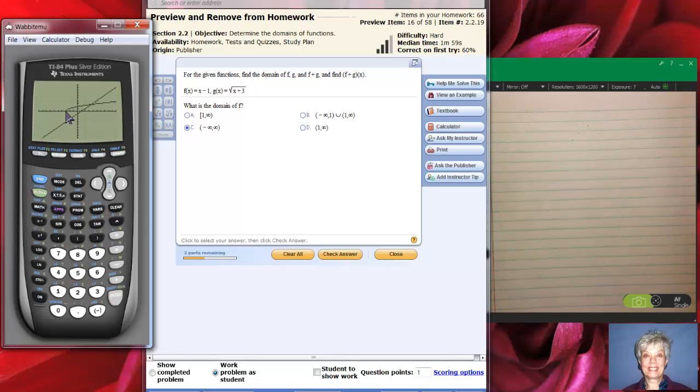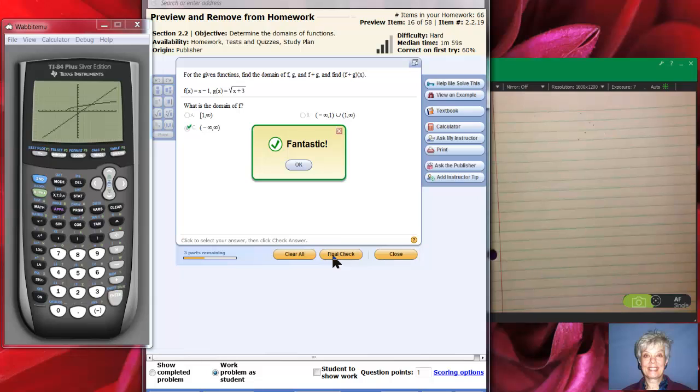Notice it starts at x equals negative 3 and then goes to the right forever. So the graph of the square root of x plus 3 is going to be bracket negative 3 to infinity.